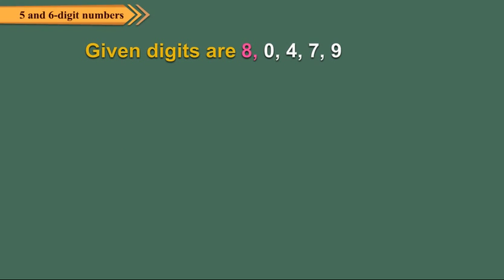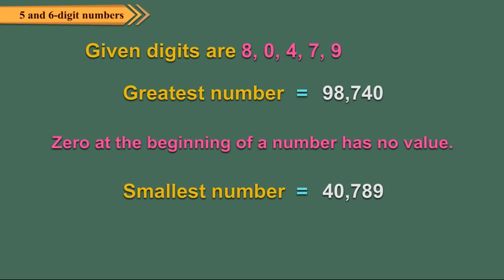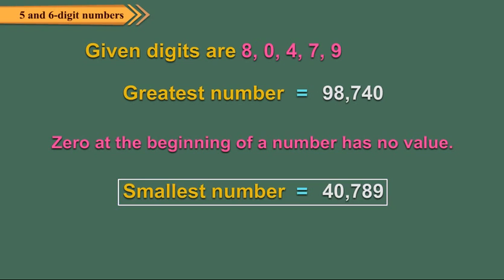Now use the digits 8, 0, 4, 7, 9 to build the greatest and smallest 5-digit numbers. The greatest number is 98740. If we arrange the digits in ascending order, we get 04789, which is actually 4789 — a 4-digit number. So whenever one of the given digits is 0, it is not written at the extreme left. When building the smallest number, we write 0 in the second place from the left. So the smallest number is 40789.